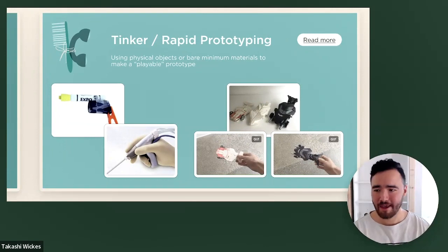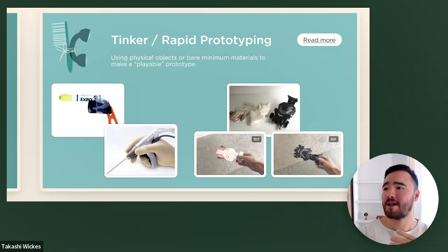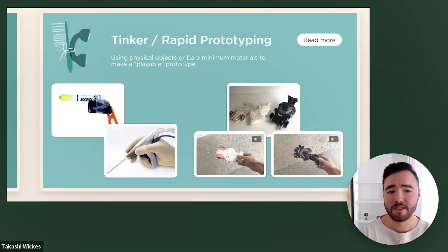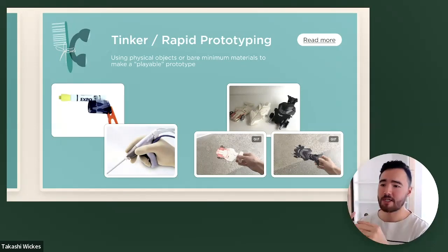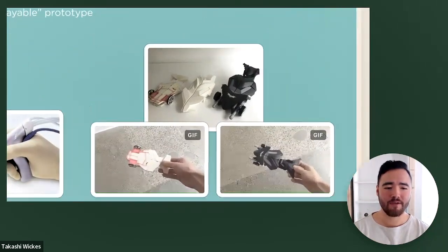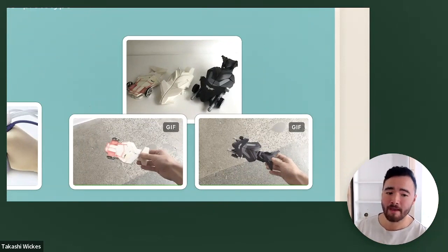Tinkering is probably one of the most classic examples of prototyping, and one of the most popular ways that IDEO is known for. This is using physical objects or bare minimum material to make a playable prototype. In the toy invention process, we start with a post-it sketch, then a full sheet sketch. Here's an example of a toy we invented — we created a foam core prototype using cardboard, then used 3D printing to emphasize what it might look like, and then this was the final product created by the toy company.